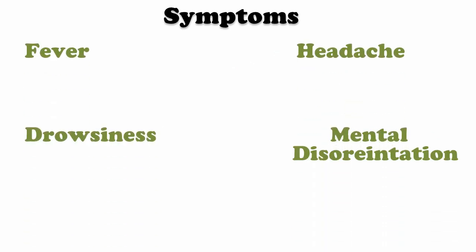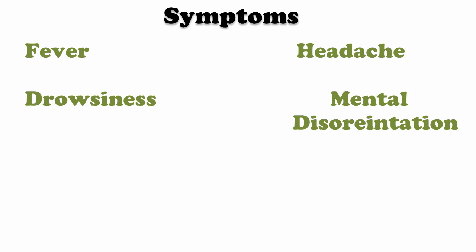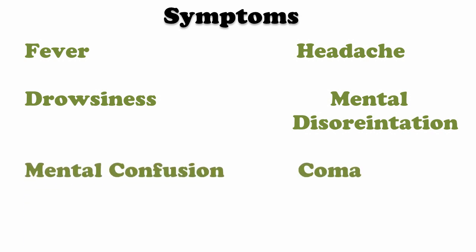Now, the symptoms. If you have the disease, you will experience fever, headache, drowsiness, mental disorientation, mental confusion, coma, and ultimately death. It may also present with acute respiratory syndrome, asymptomatic infection, and fatal encephalitis. Primarily it causes encephalitis syndrome and has a high mortality rate.